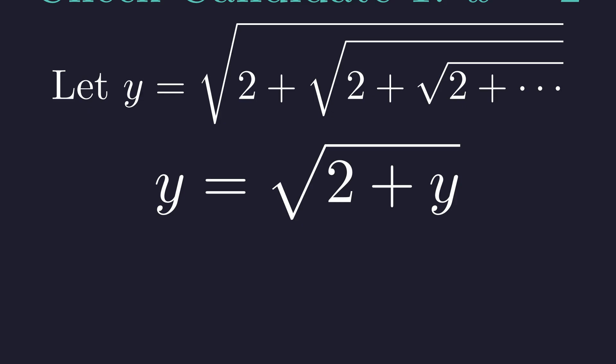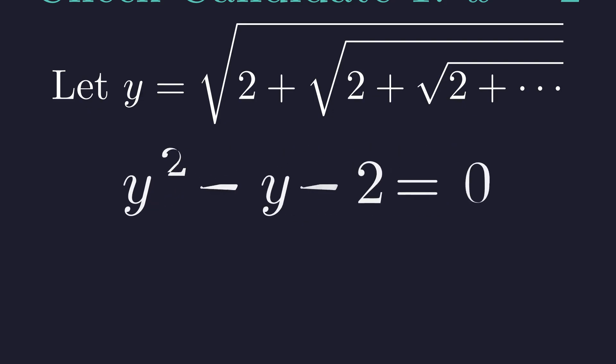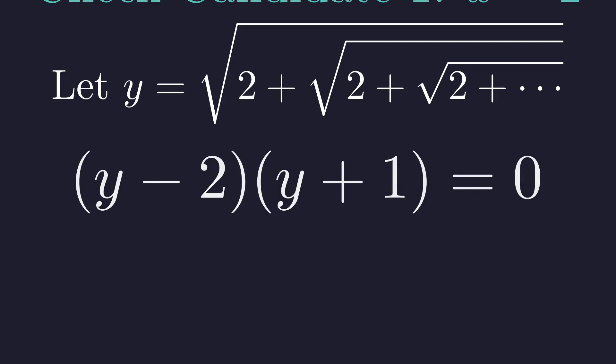Squaring gives us a quadratic. Factoring this, we need two numbers that multiply to negative 2 and add to negative 1. Those are negative 2 and positive 1. This gives two possibilities for y.